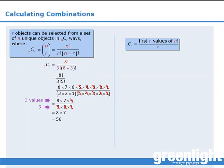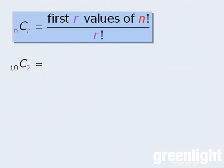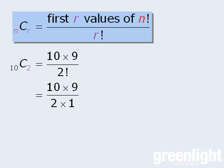Now let's practice this technique. We'll begin with 10 choose 2. Here the R value is 2, so the numerator will be the first two values of 10 factorial, and the denominator will be 2 factorial. Next we'll expand 2 factorial, and we can now simplify this to be 45. So we can select two objects from a group of 10 objects in 45 different ways.